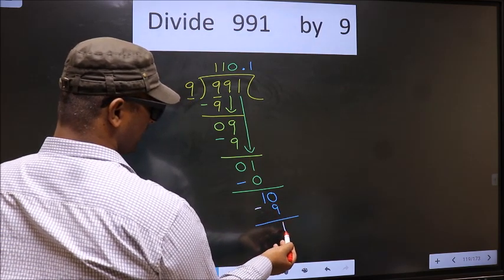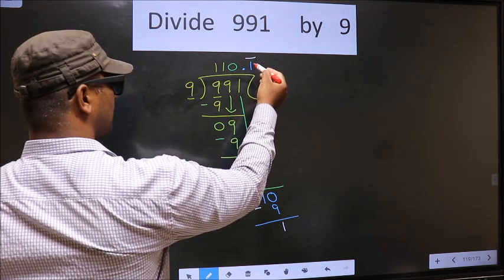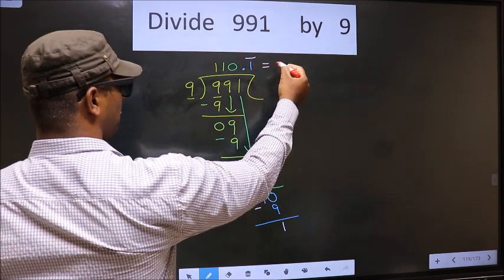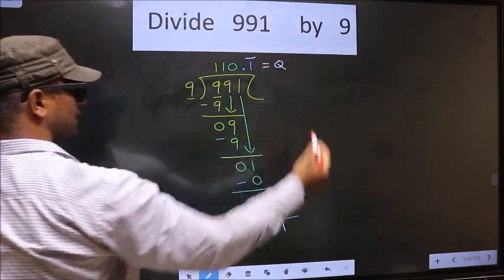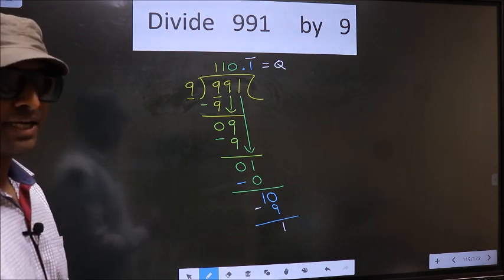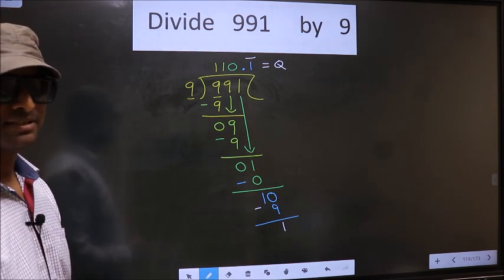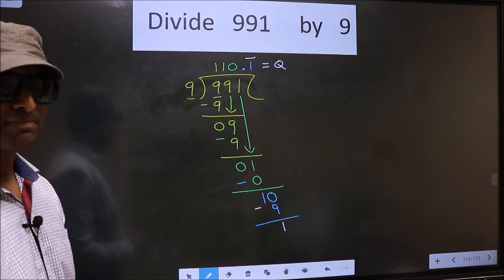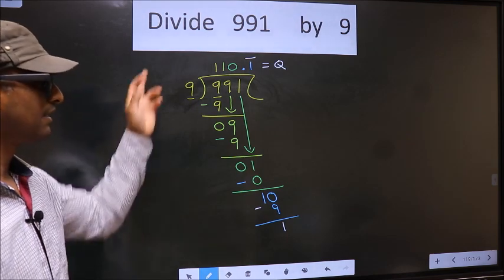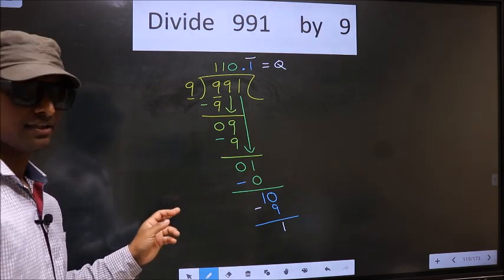We got 1 again. That means we get bar on this number. So this is our quotient. Did you understand where mistake happens? You should not do that mistake. Am I clear?